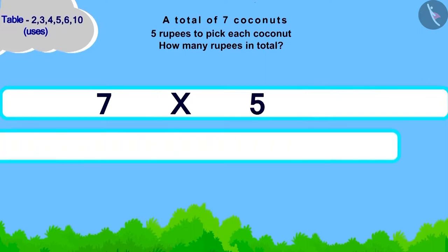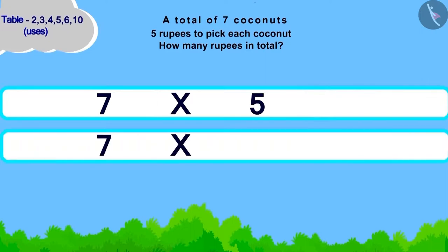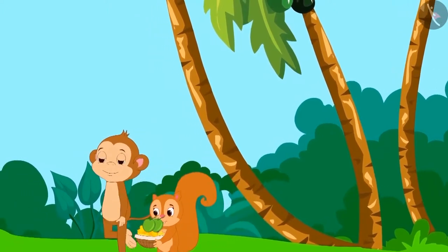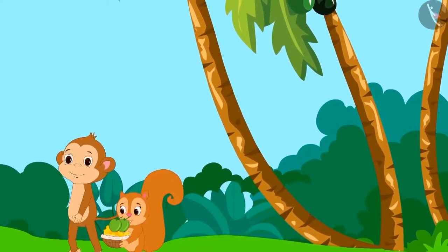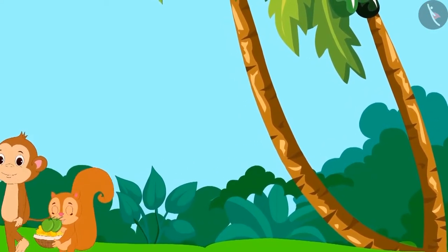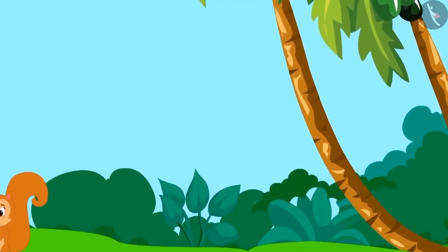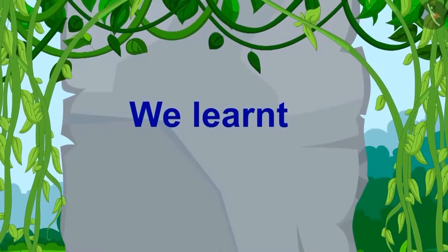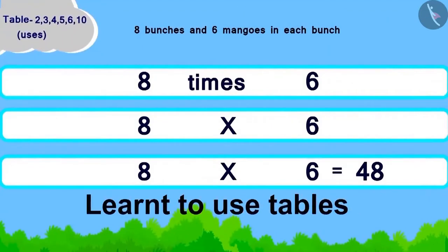Children, you have solved this correctly. Chanda will have to give thirty-five rupees to Babban. Chanda collected the coconuts and gave money to Babban. Now, both of them went to rest under a tree. Children, in this lesson, we learned to use tables.